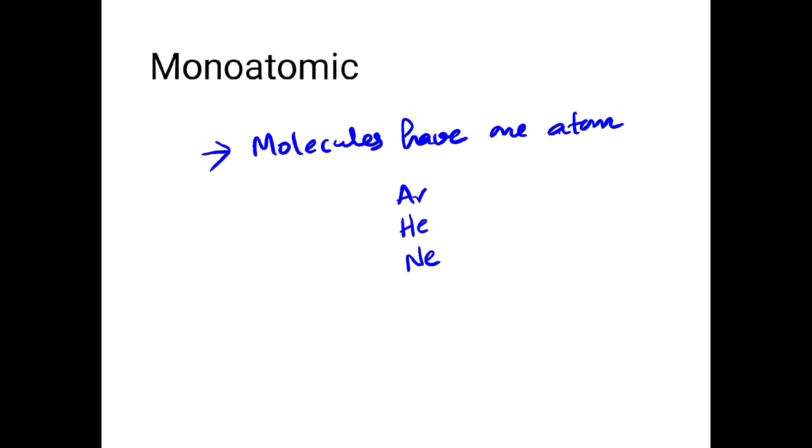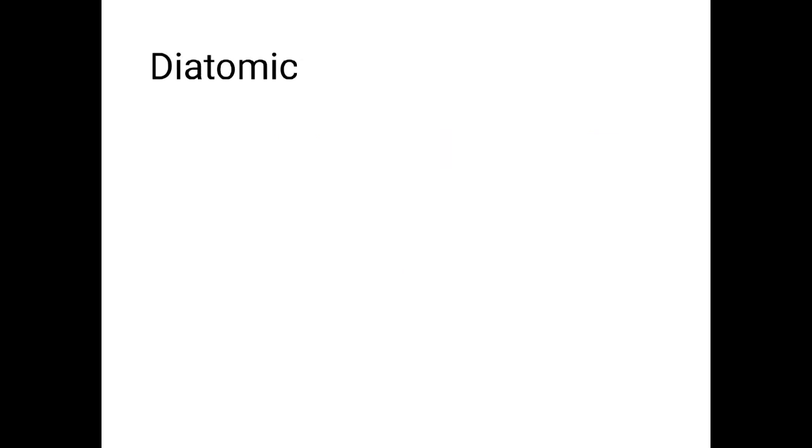These monoatomic molecules exist as natural single atoms. While in diatomic molecules, you can see two atoms. So in diatomic molecules there are two atoms. These molecules have two atoms and they cannot exist naturally without two atoms.